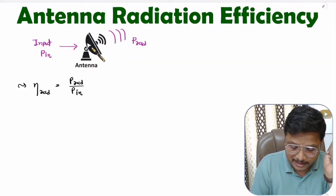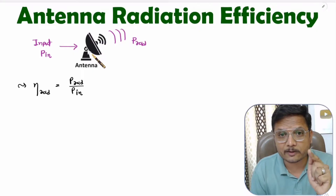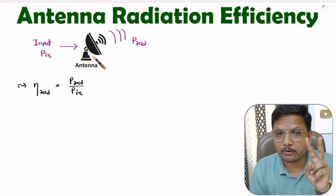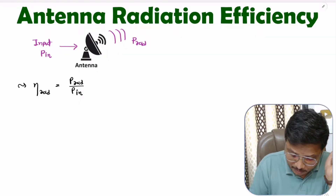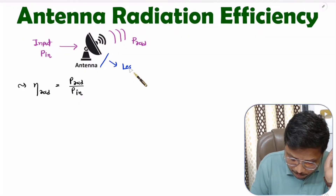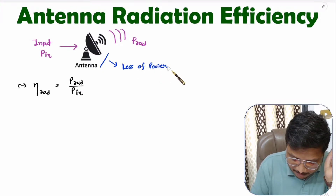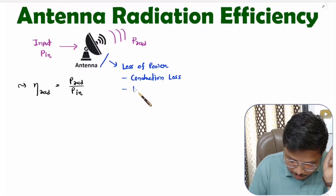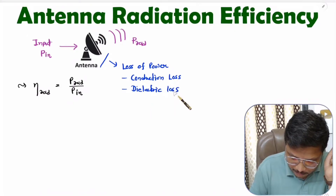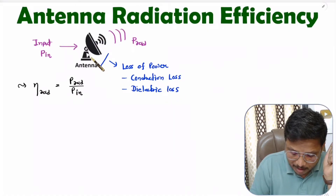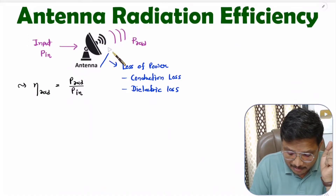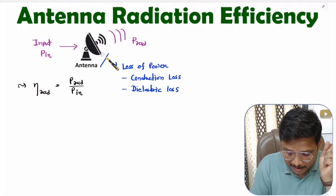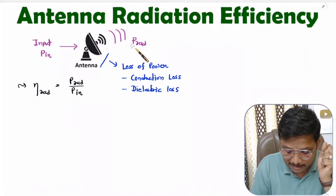With this antenna, somewhat power is getting lost. That loss of power is happening because of two reasons: one is due to conduction loss and second is due to dielectric loss. If you maximize radiated power, then you can maximize radiation efficiency. Alternatively, if you minimize the loss of power, then also you can maximize radiation efficiency.